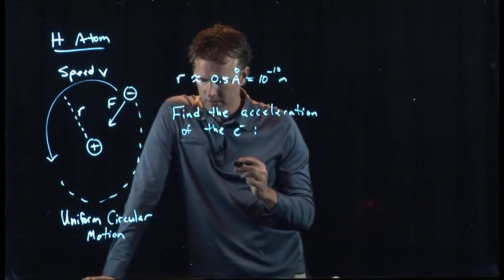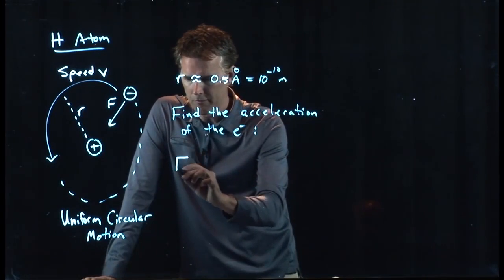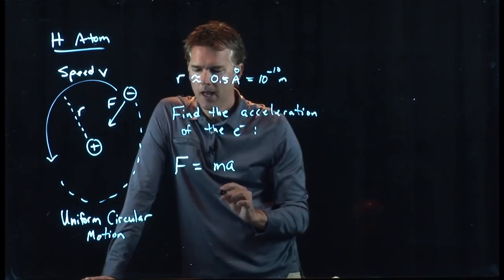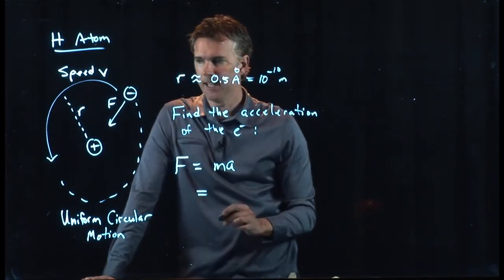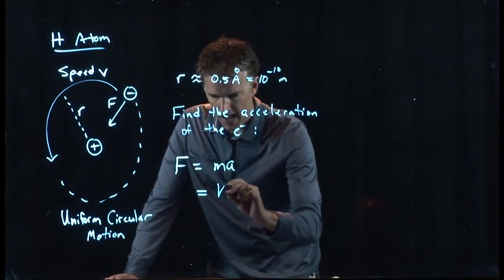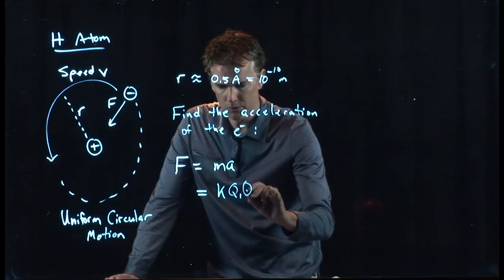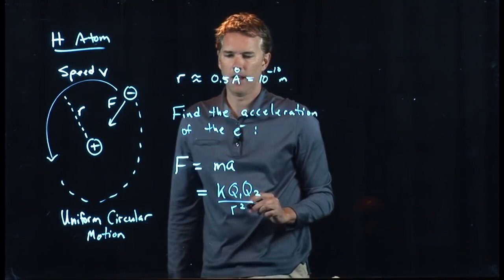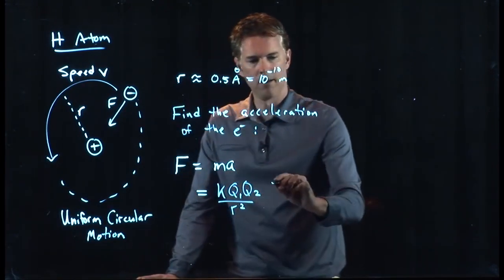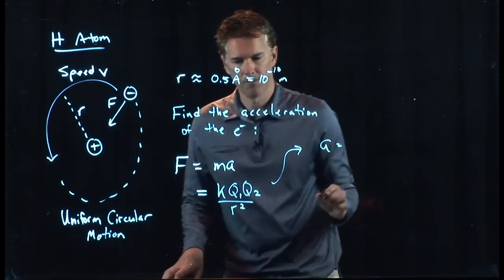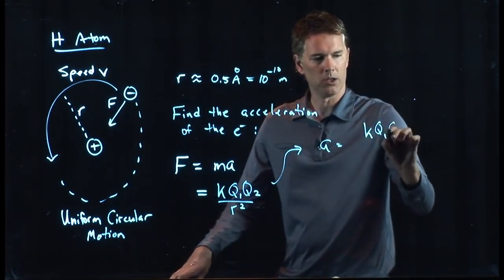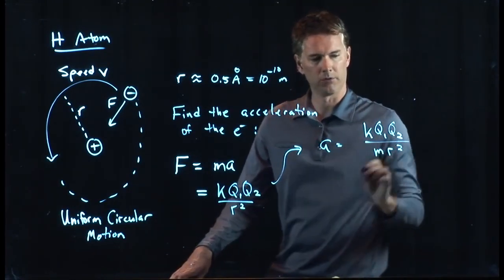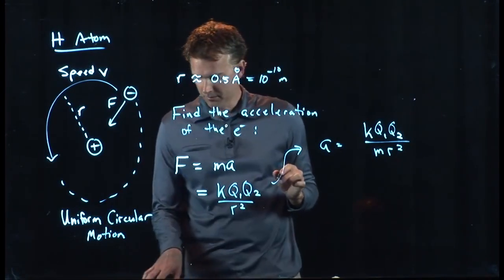But we know what acceleration is, and we know how it relates to force. Force is equal to MA. And we know what the force is in this case. It is Coulomb's law. So it is K Q1 Q2 over R squared. And now we can solve this thing for A. A is equal to K Q1 Q2 divided by MR squared. And now we have all those numbers, so let's plug them in.